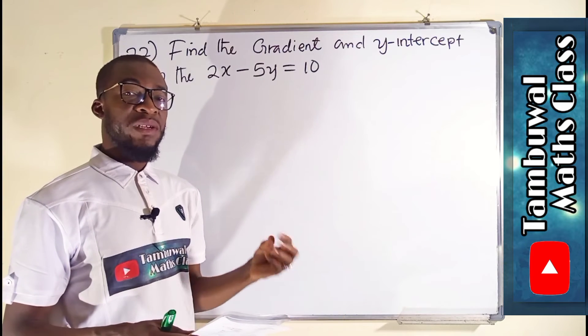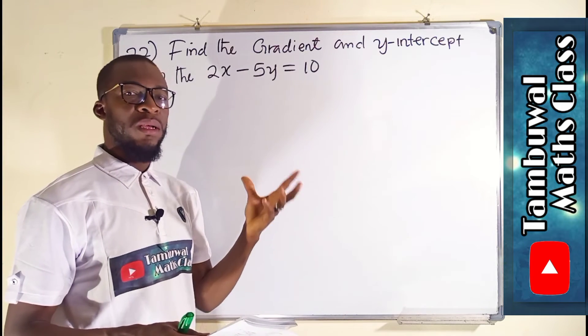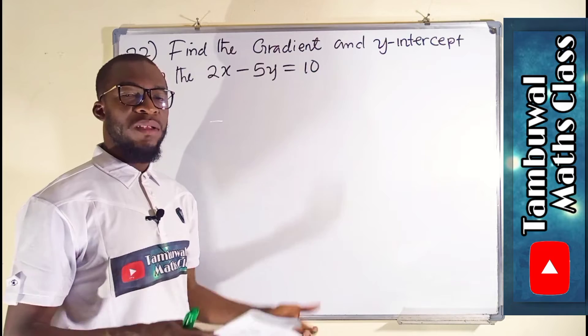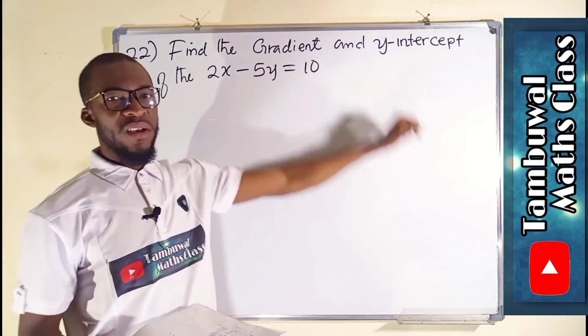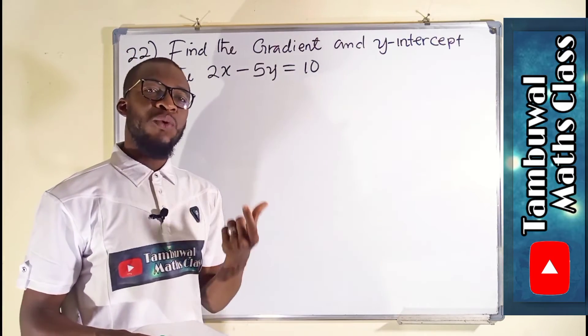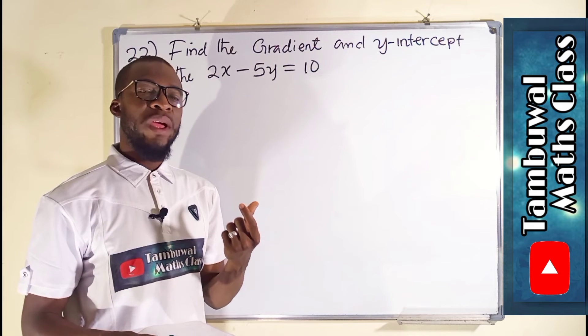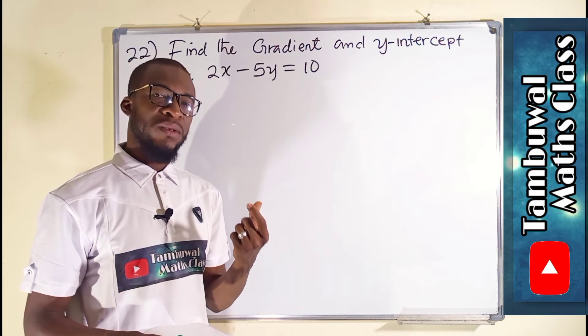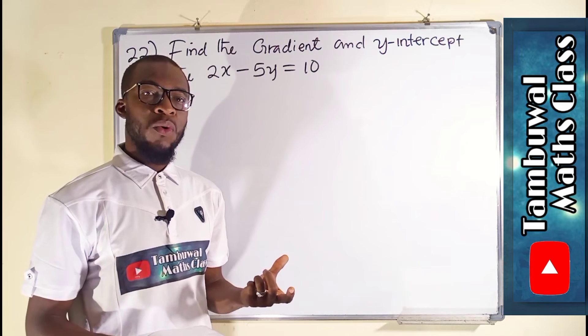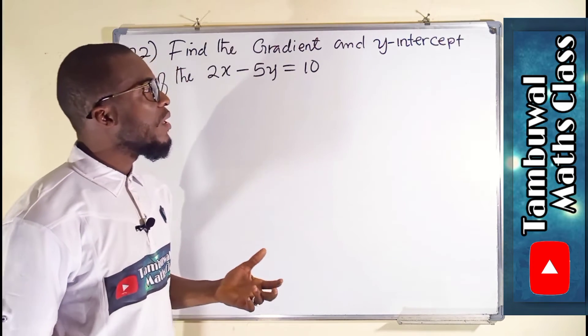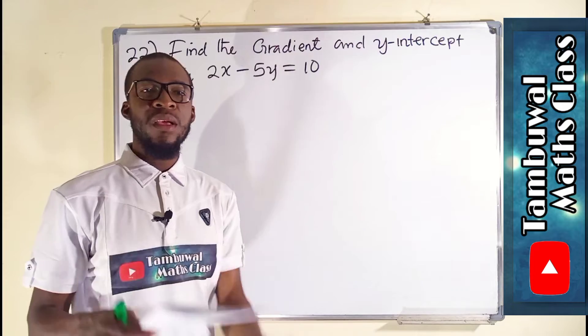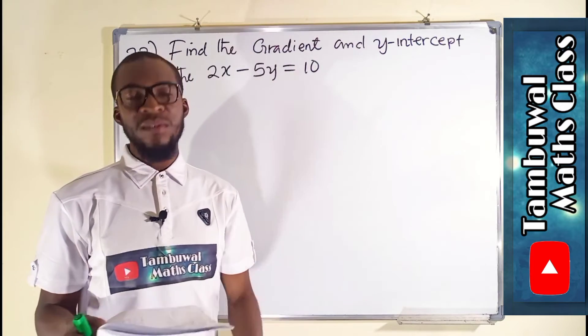Gradient is the rate of change of y with respect to x, that is the slope, while the y-intercept is that value of y when the corresponding value of x is equal to 0. Or graphically, we say it is that point on y-axis where the line touches the y-axis.